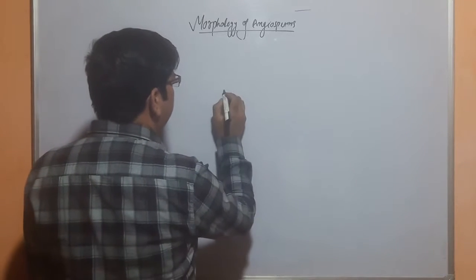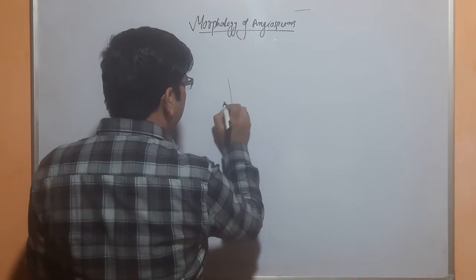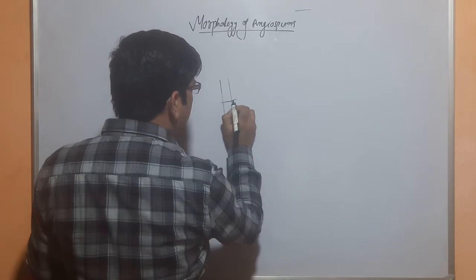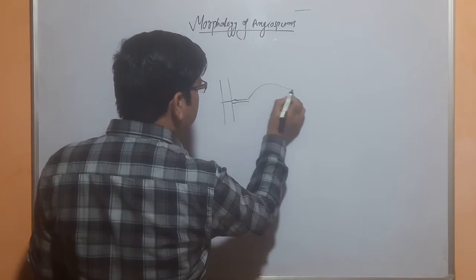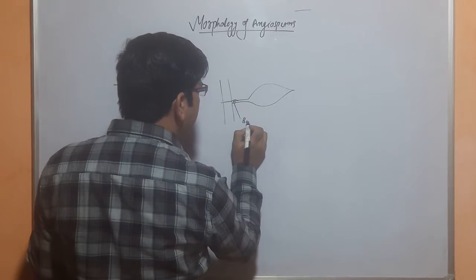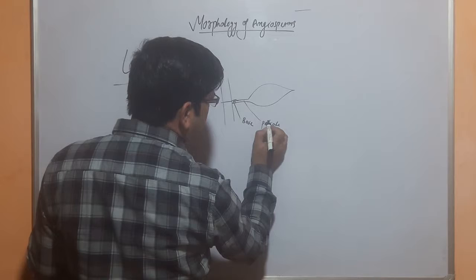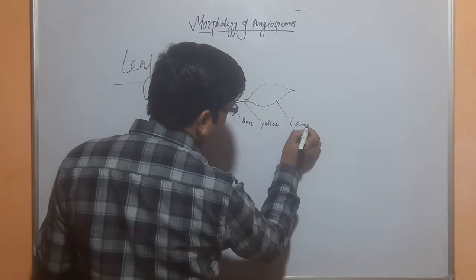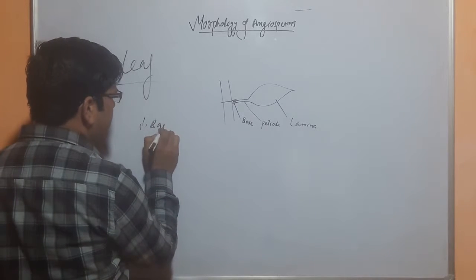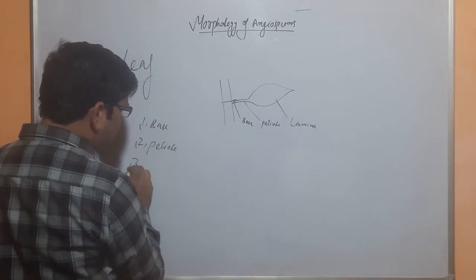A leaf has three important parts. This is a branch, and here is the node from which the leaf arises. So a leaf has three parts: the leaf has a base, called the base; then we have a stalk, called the petiole; and then we have a blade, called the lamina.